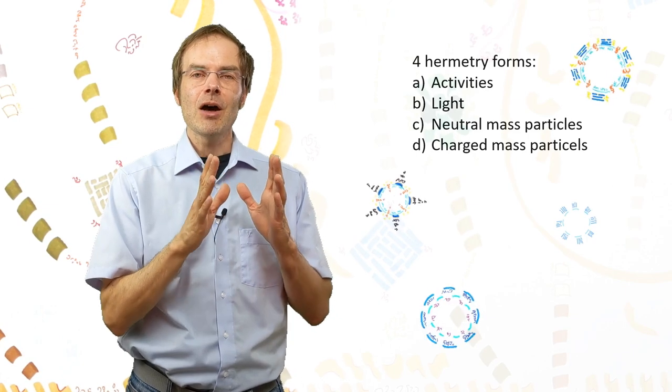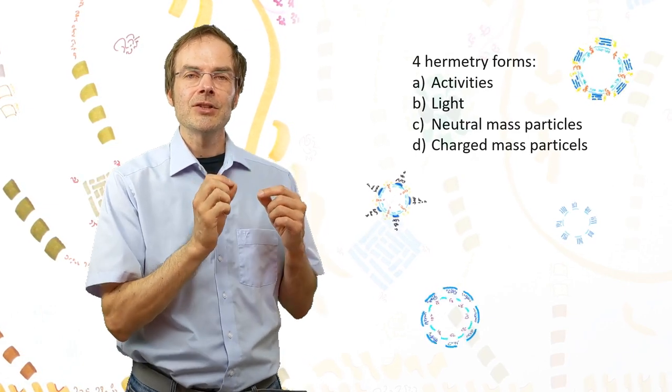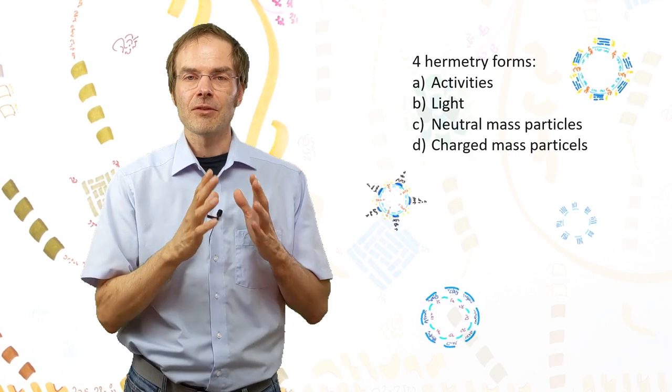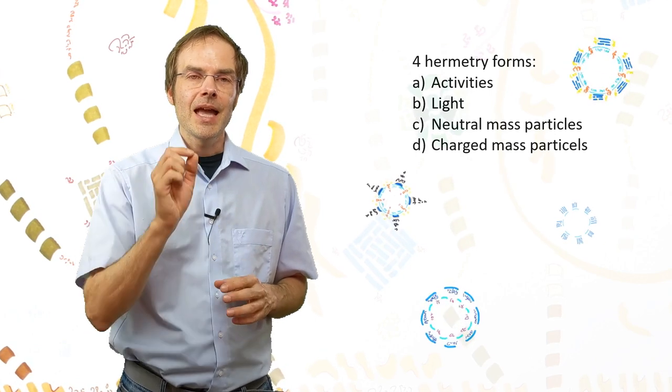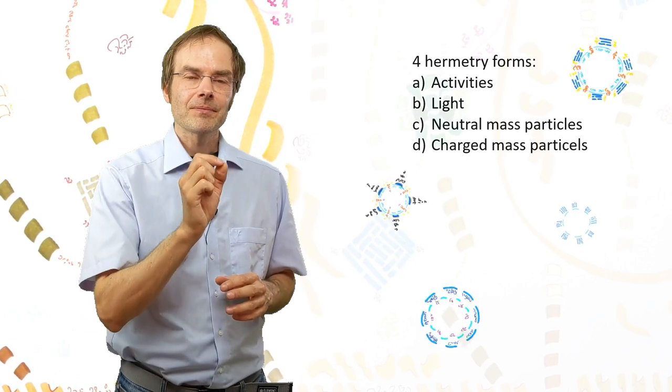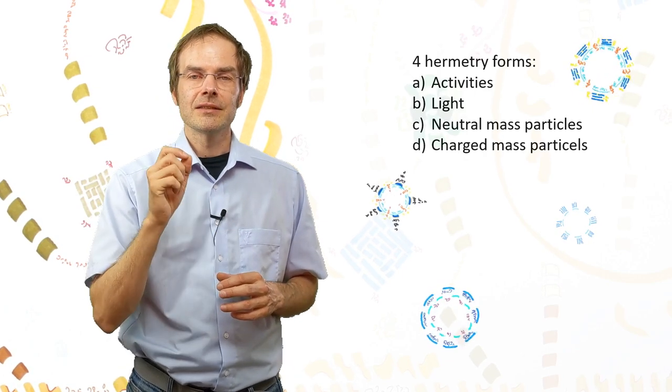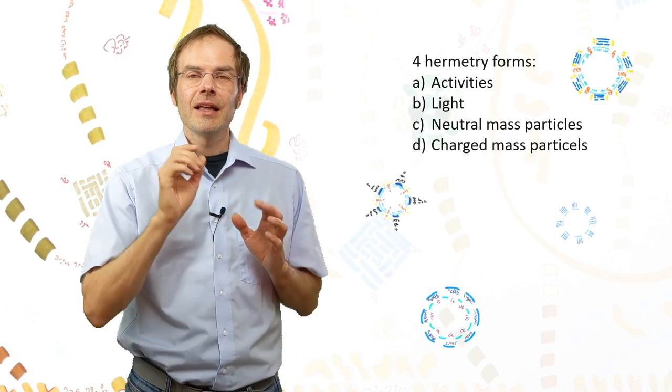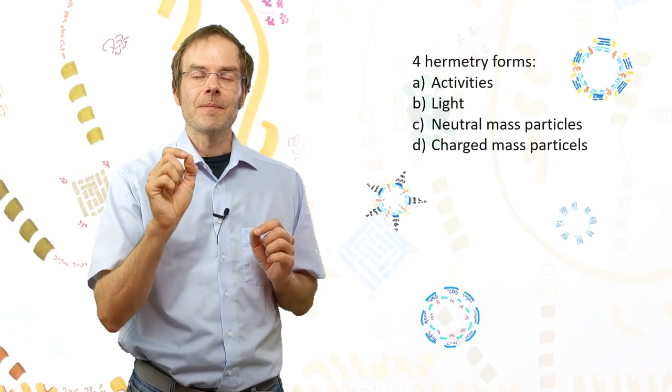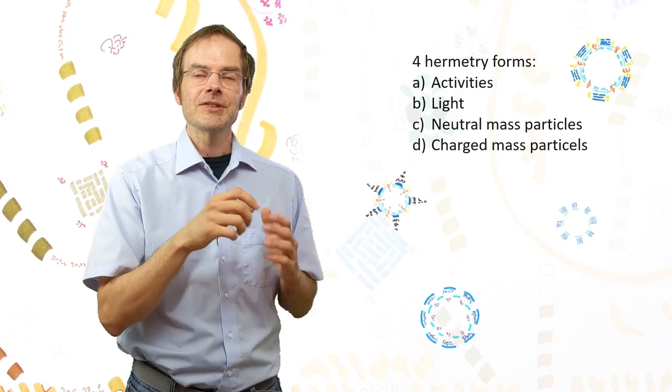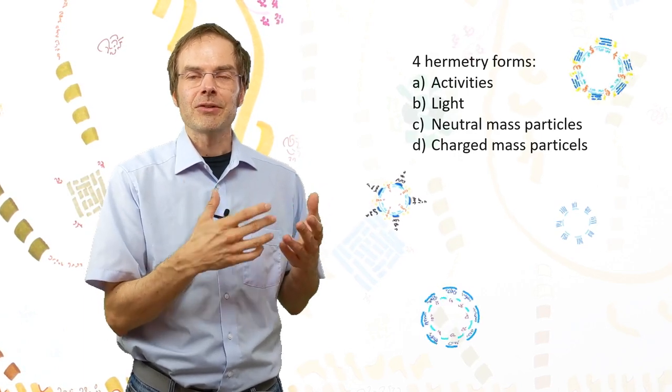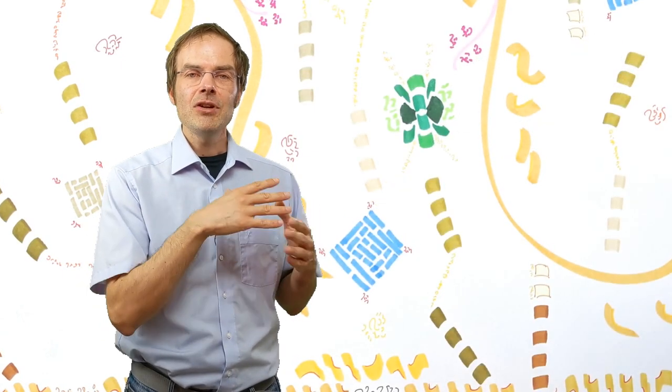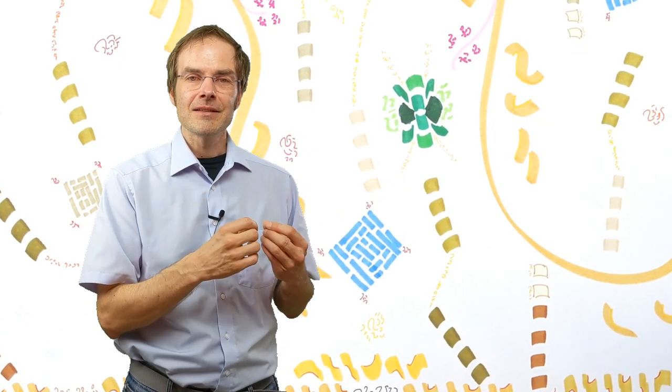And these activities, they only have components which reside in dimensions five and six. So they are, by nature, something immaterial. But all others, all other three hermetry forms—light and neutral and charged particles—they as well have always an activity component. That's because activity means it's a structure. And there can be no matter without a structure anyway. So every material structure extends, if you will, into the trans-realm, into the immaterial.